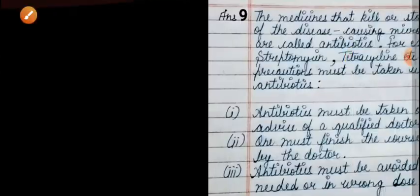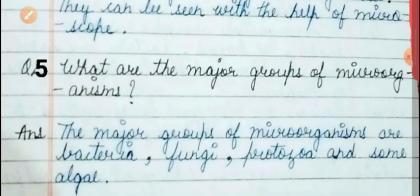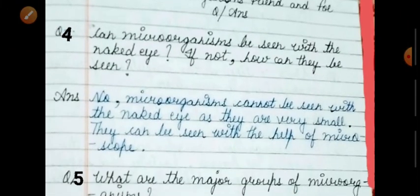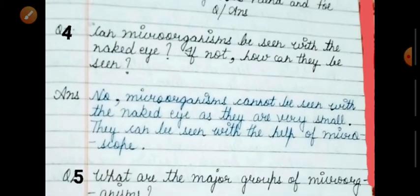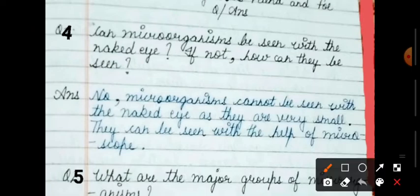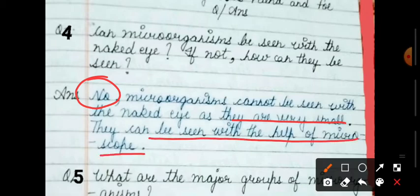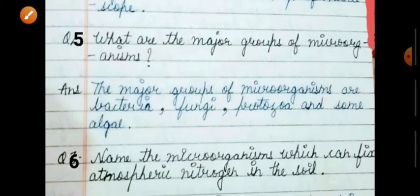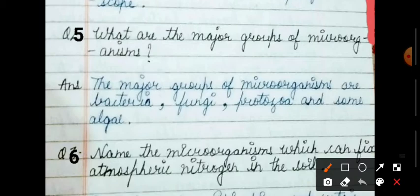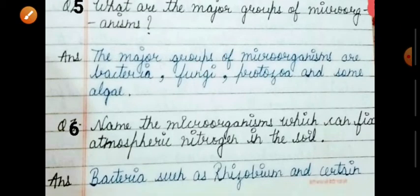Next, question answers. Fourth question: can microorganisms be seen with the naked eye? No, they can't be seen. If not, how can they be seen? They are very small and they can be seen with the help of a microscope. Second question: what are the major groups of microorganisms? Major groups: bacteria, fungi, protozoa, and some algae like blue green algae.